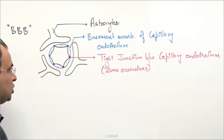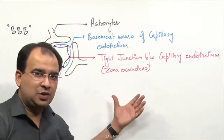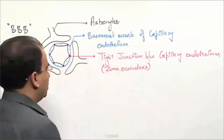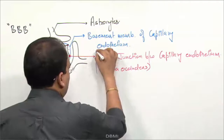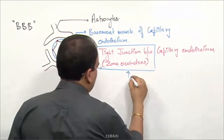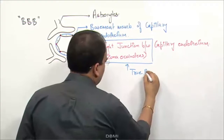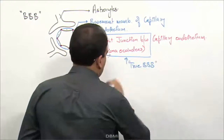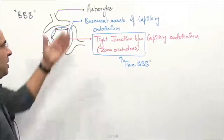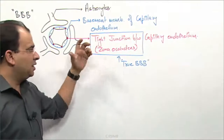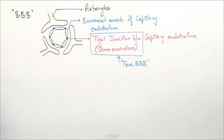If the question is asked, what is the true blood brain barrier out of all these three? It is not the astrocytes — it is actually the tight junction between the capillary endothelium. This is the true blood brain barrier. The three components are astrocytes, basement membrane, and tight junction, but the true blood brain barrier is only the tight junction between the capillary endothelium.